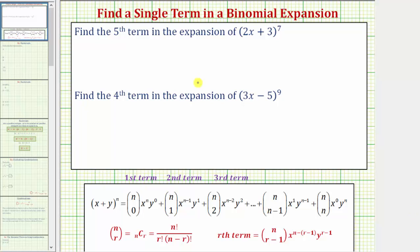We're asked to find a single term in a binomial expansion. We know from the binomial theorem we can find the expansion of the quantity x plus y raised to the power of n using this formula, but we don't want to have to find the entire expansion to find a single term.